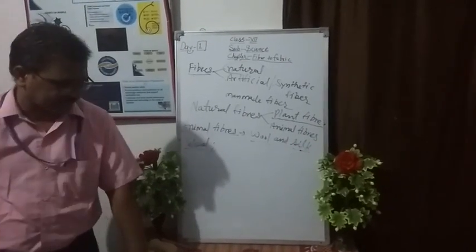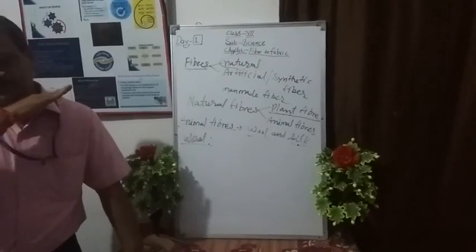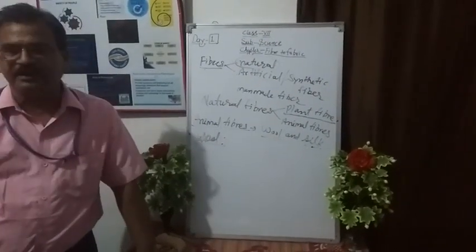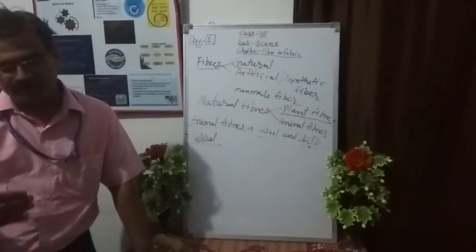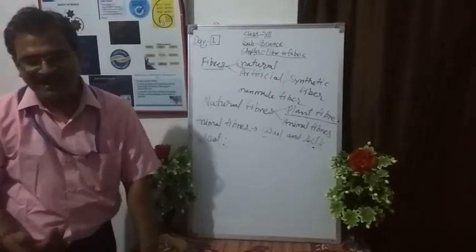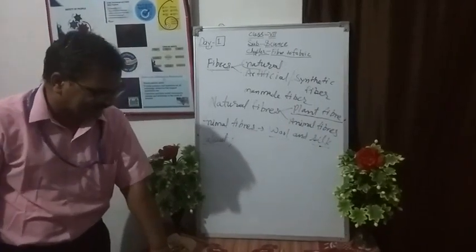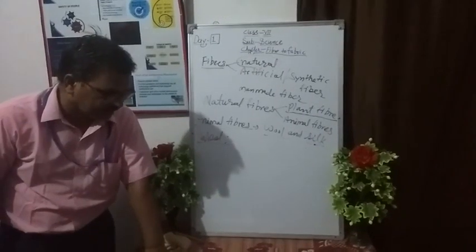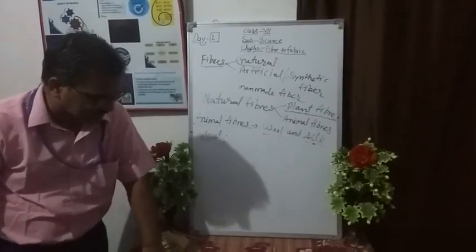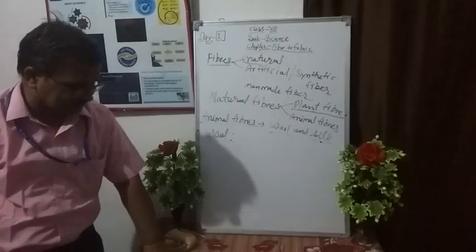Wool is highly porous and traps air in between the spaces of the fibers. Since air is a poor conductor of heat energy, the heat produced between the woolen cloth and the human body does not escape. It acts as an insulator and does not allow body heat to escape, therefore woolen fabric keeps us warm during winter.